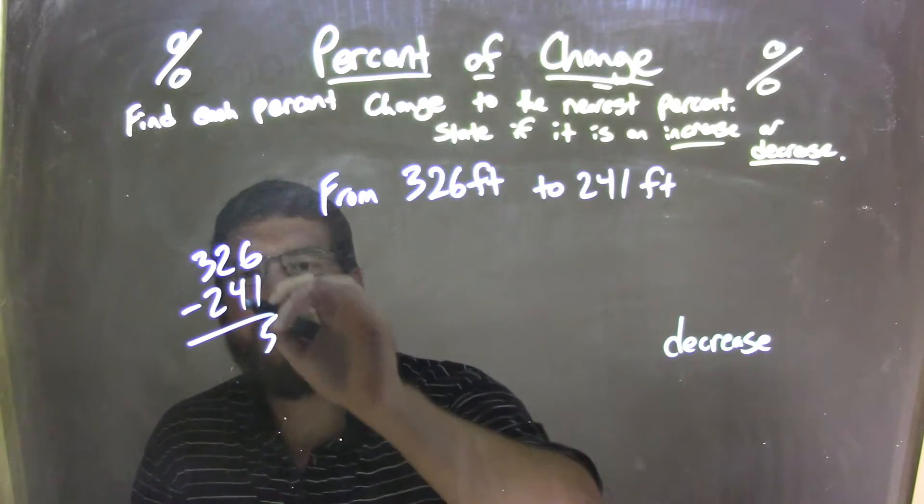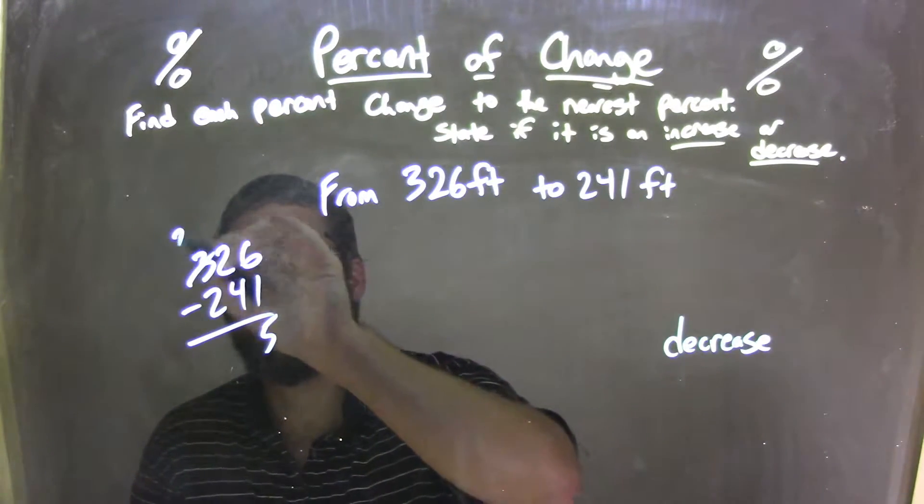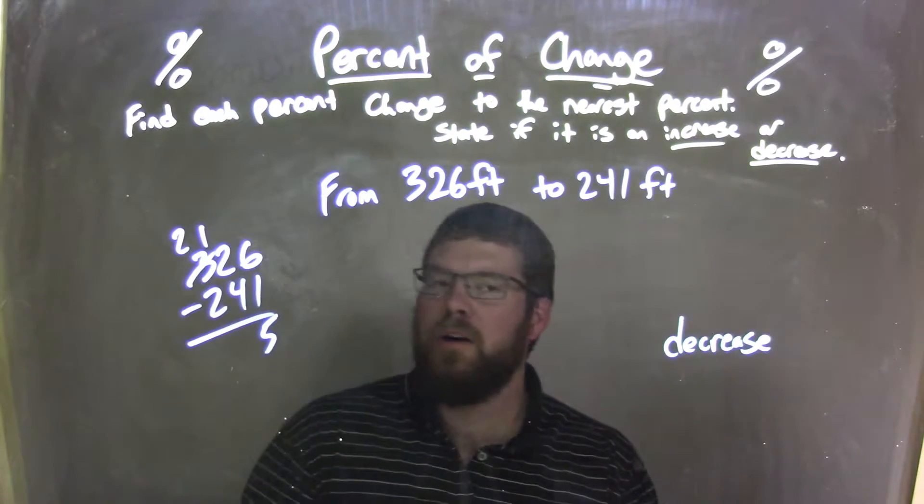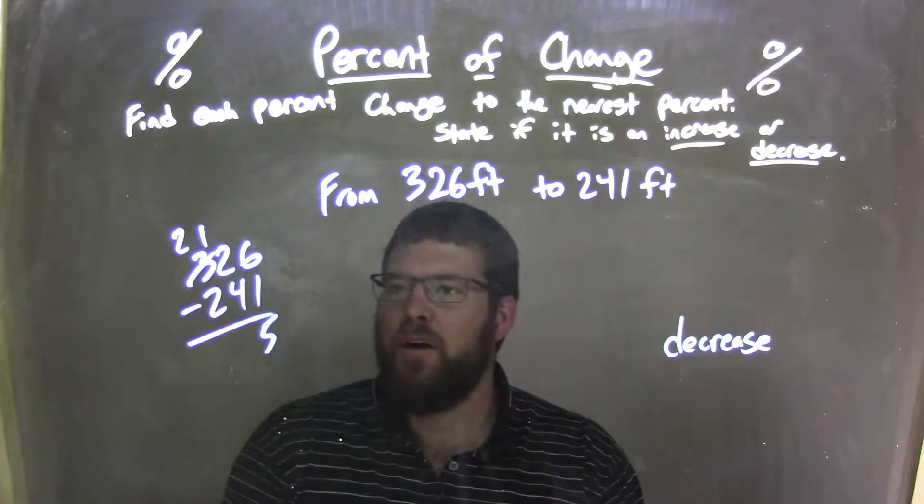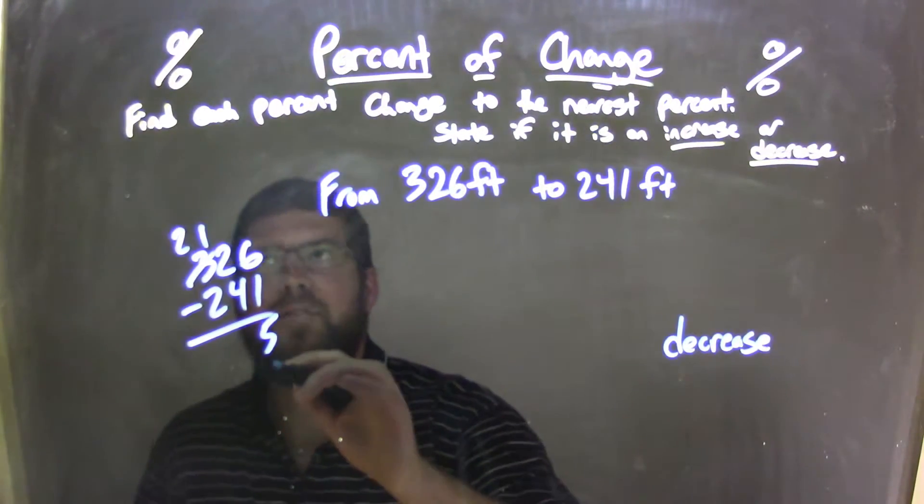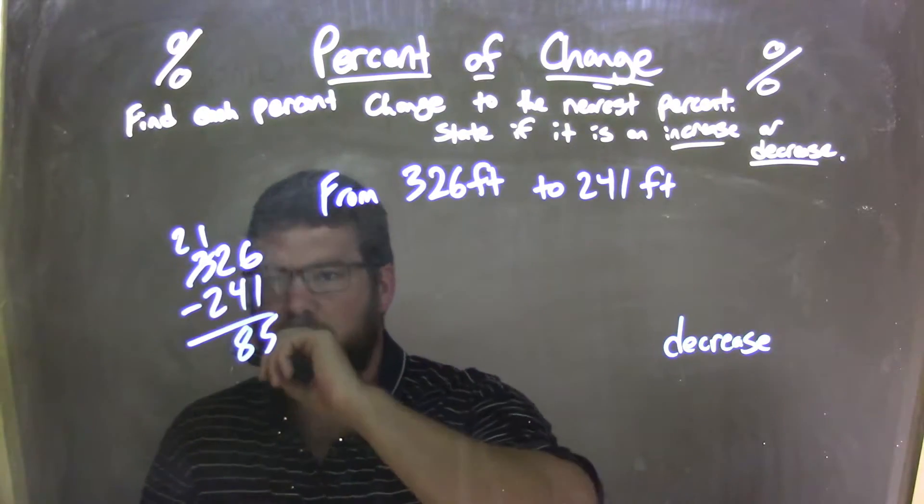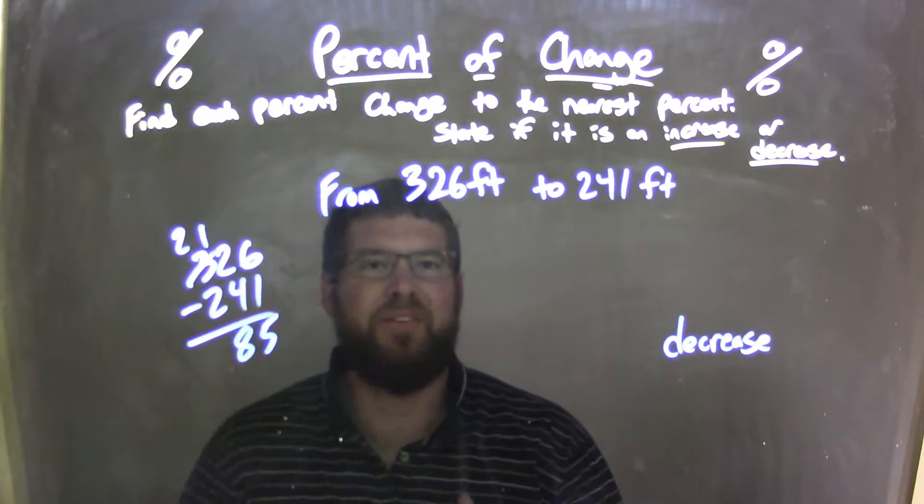6 minus 1 is 5. 2 minus 4, can't do that. Let's make the 3 into a 2, the 2 into a 12. So we have 12 minus 4 here. 12 minus 4 comes out to be 8, and 2 minus 2 is just 0, so we have 85.